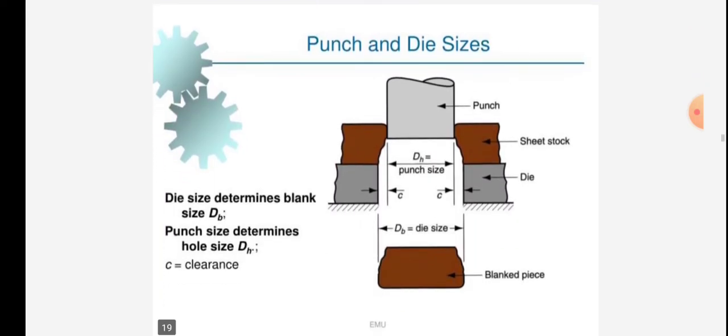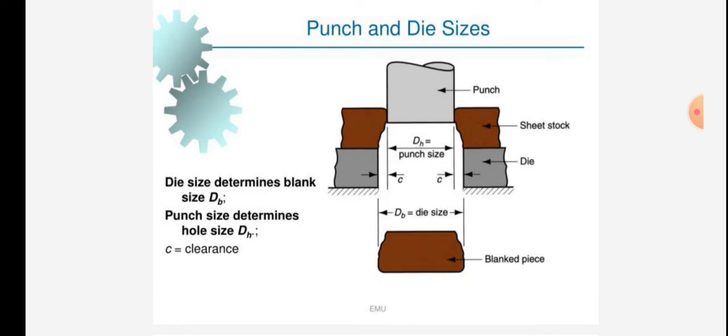Punch and die sizes are given in the figure: DB is the die size, C is the clearance, and DN is the punch size. Sheet stock, die, and punch are shown. Die size determines blank size DB. Punch size determines hole size DN. C is the clearance.